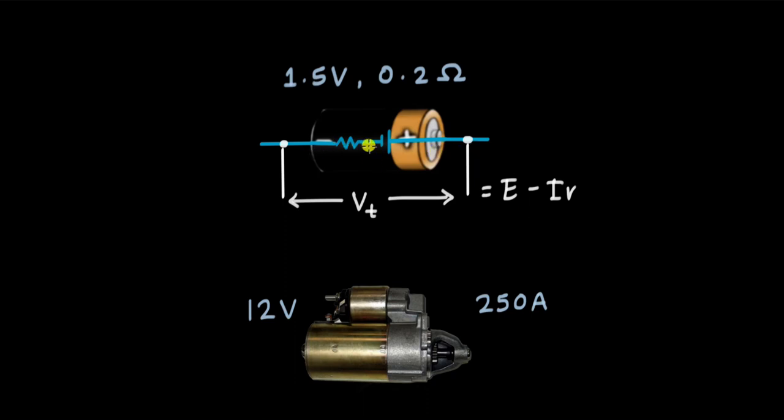So if 2 amperes of current is flowing over here, the terminal voltage would be 1.5 minus 2 into 0.2, and this comes out to be equal to 1.1 volts. So this AA battery will supply a voltage of 1.1 volts when 2 amperes of current is being drawn from it.